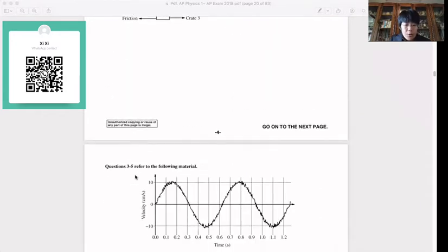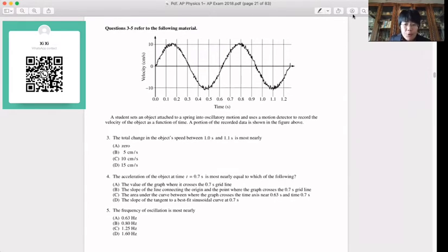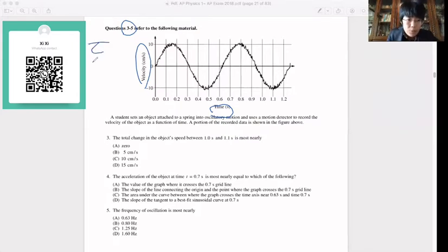Now let's move on to question 3. Questions 3 to 5 refer to the same material, this graph of velocity and time. A student set an object attached to a spring into oscillation motion, moving up and down like that. Using a motion detector to record the velocity of the object as a function of time. A portion of the data is shown in the figure above. This is velocity—it can be positive or negative. It's like a spring up and down there.